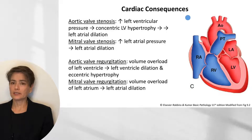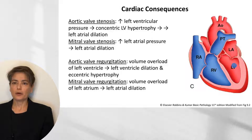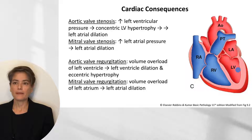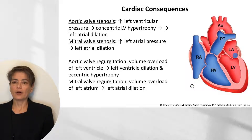Let's look at the cardiac consequences. With aortic valve stenosis, we get increased pressure in the left ventricle, leading to concentric left ventricular hypertrophy. Over time, as the valve becomes more narrowed, the chamber will become small, resulting in left atrial dilation since the atrium cannot empty fully. With mitral valve stenosis, we get increased left atrial pressure, leading to left atrial dilation.